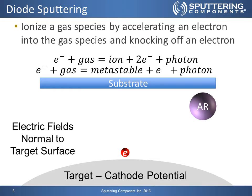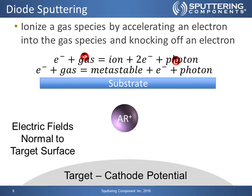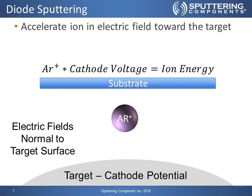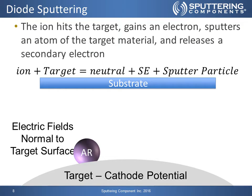In our example here, we have our substrate up at the top, our argon molecule on the right-hand side, and an electron down by the target, which is at a cathode potential so it's negatively charged. The electric fields come off normal to the target surface, pushing this electron away from the surface and causing it to collide with our argon molecule. The argon moves, the electron hits it, another electron comes off, and now we have an argon ion. Once created, this argon ion sees the electric fields produced by the cathode potential and accelerates into the surface of the target material. When the argon ion hits the surface of the target, it collects an electron, releases a secondary electron, and also releases a sputtered particle from the surface of the target material.